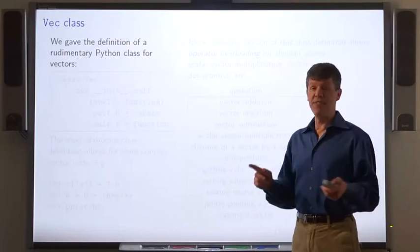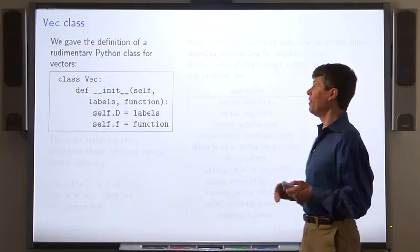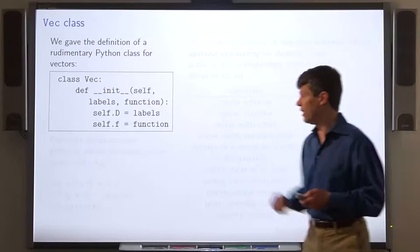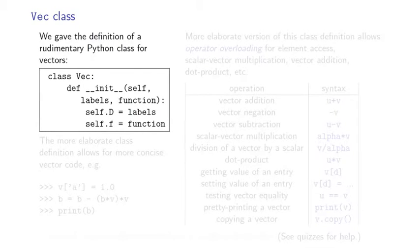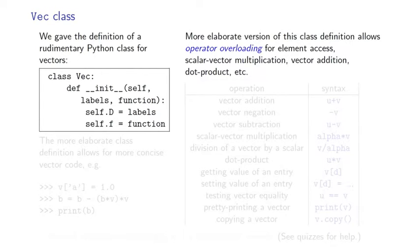Now, earlier we gave the definition for a rudimentary Python class for vectors. Here it is. But we're going to code a much more elaborate version of the class that allows use of operator overloading for element access, scalar vector multiplication, vector addition, dot product, and so on.